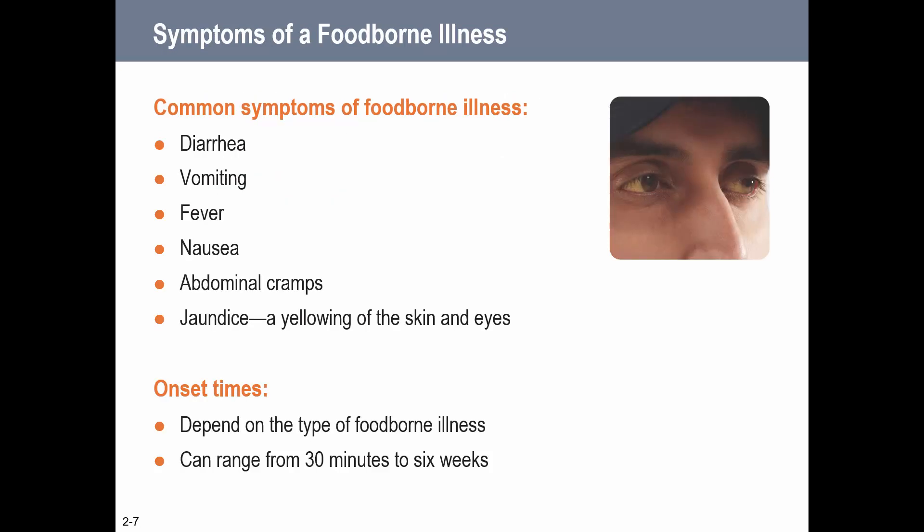Every one of you has probably had some of these symptoms at some point, whether from a foodborne illness or not, which makes foodborne illness a little tricky. A lot of these symptoms are very nonspecific - lots of things can cause someone to throw up or feel nauseous. One symptom to point out that you may not have heard of is jaundice, which is a yellowing of the skin and eyes. Jaundice could be caused by hepatitis A, but it could also be caused by lots of other things.